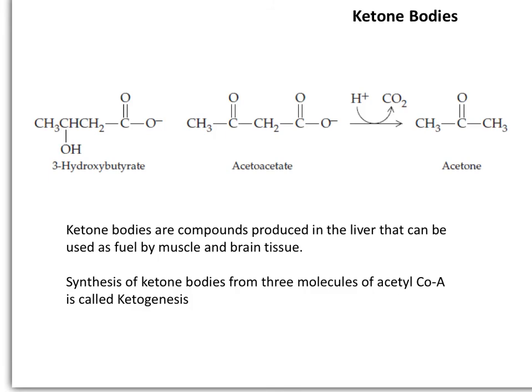High concentrations of ketone bodies in the blood could be fatal. Because two of the ketone bodies are carboxylic acid products, these substances can lower the pH of the blood and overwhelm the blood's buffers. This is known as ketoacidosis — a process by which blood pH drops due to the accumulation of ketone bodies. At low pH, hemoglobin loses its affinity for oxygen. If this condition is untreated, it can lead to coma or death.